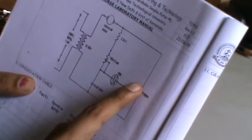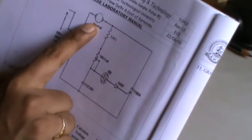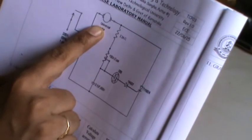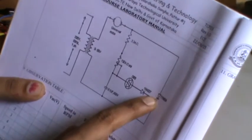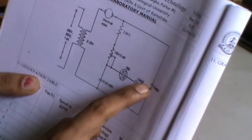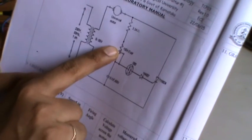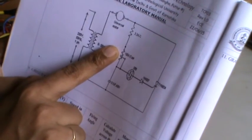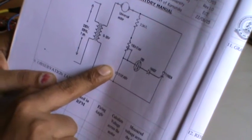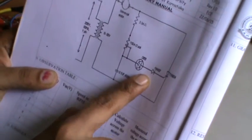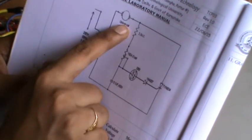By controlling the conduction time of this SCR, the voltage across the universal motor is varied and the speed will be varied. The conduction time is varied by varying the firing angle. The firing angle is varied by varying the R value. When the R value is more, this capacitor will take more time to charge, the firing angle will be more, conduction time will be less, voltage will be less, and speed will be less.